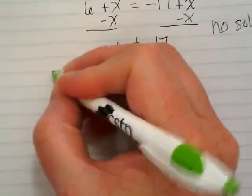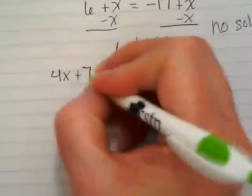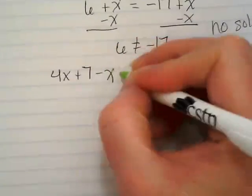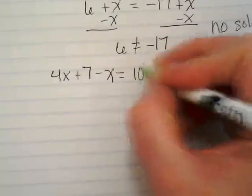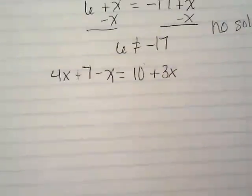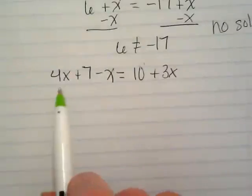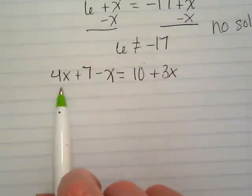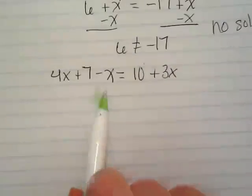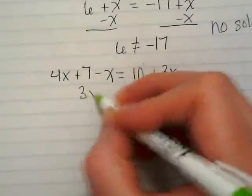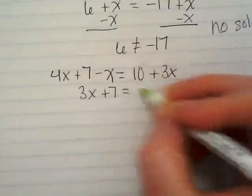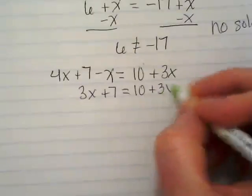Let's do a couple more. Write down 4x plus 7 minus x equals 10 plus 3x. What's my like terms?